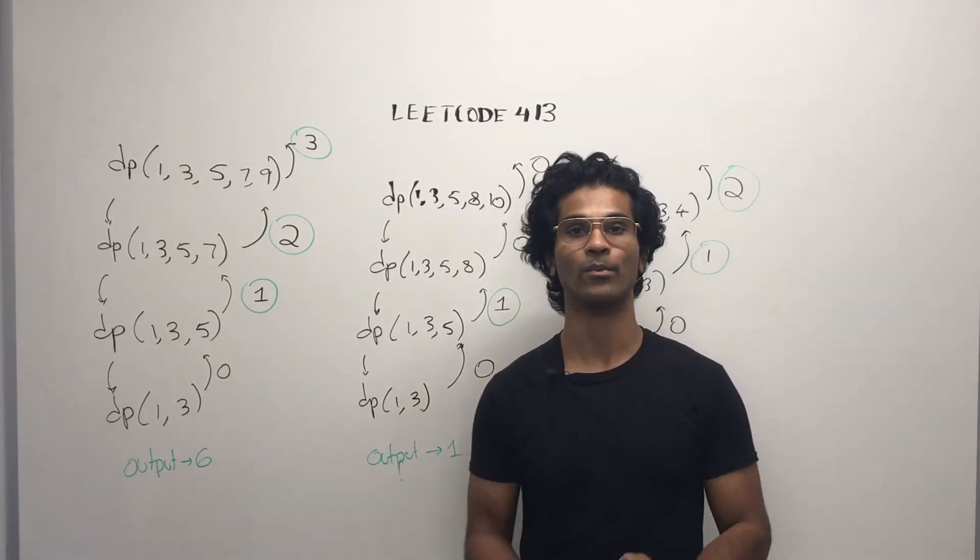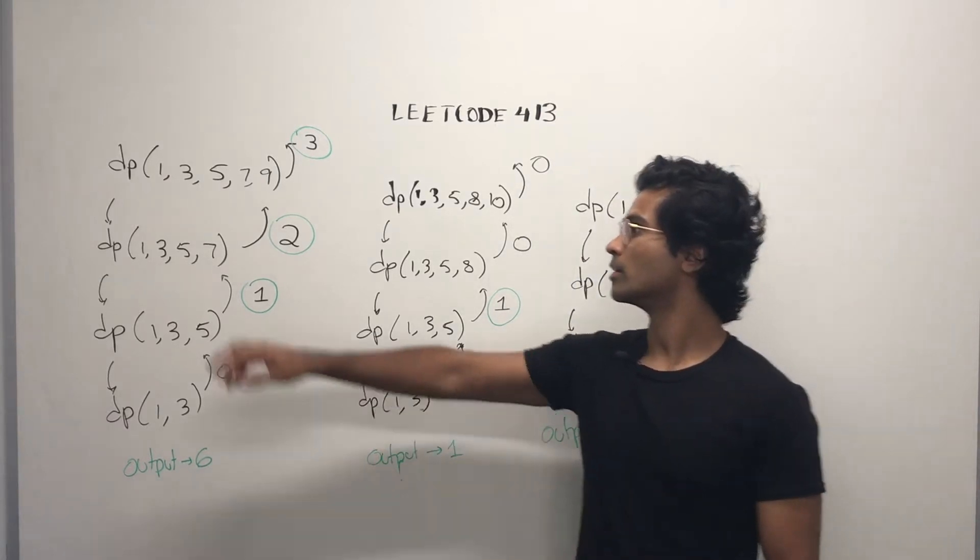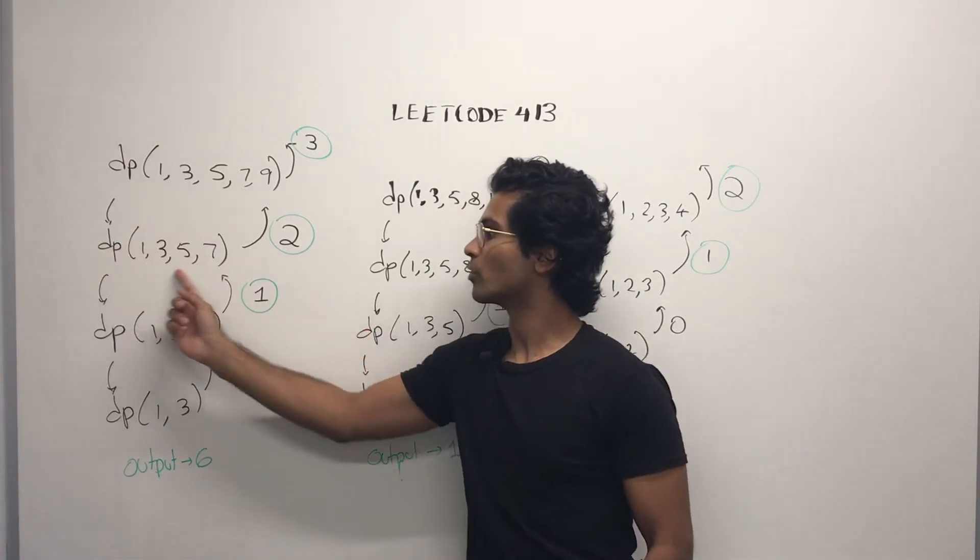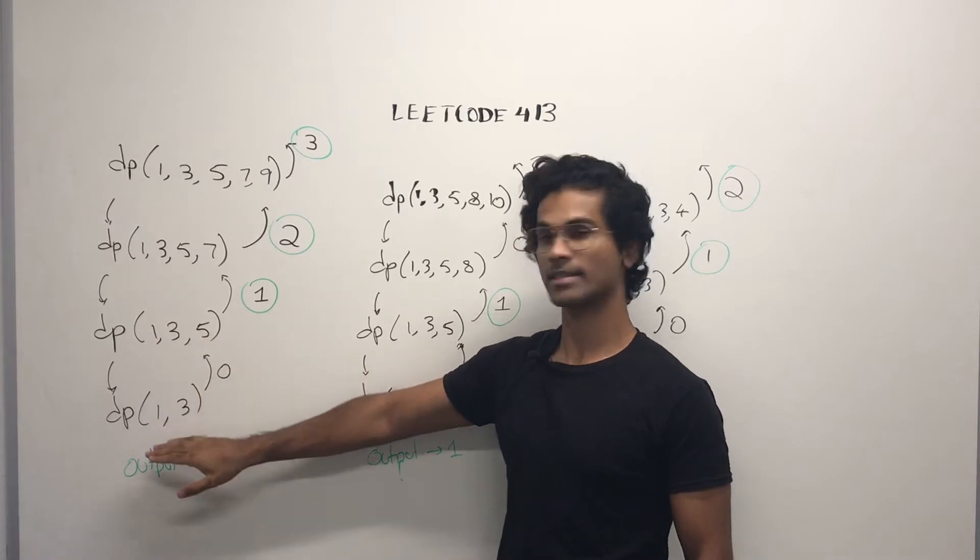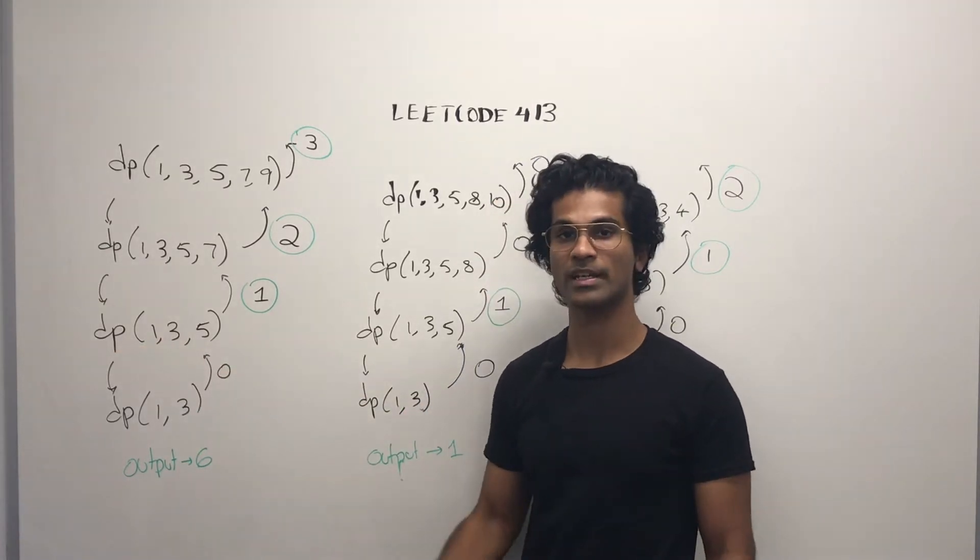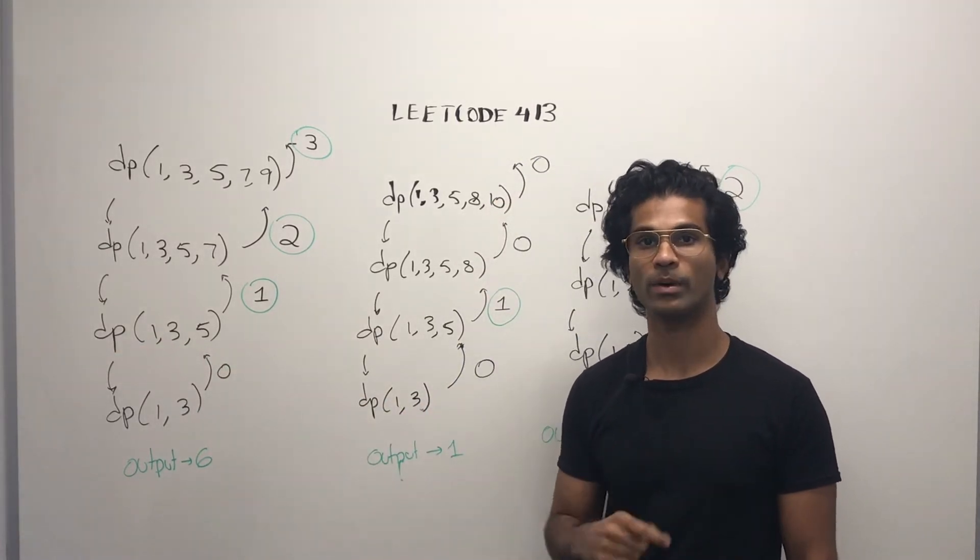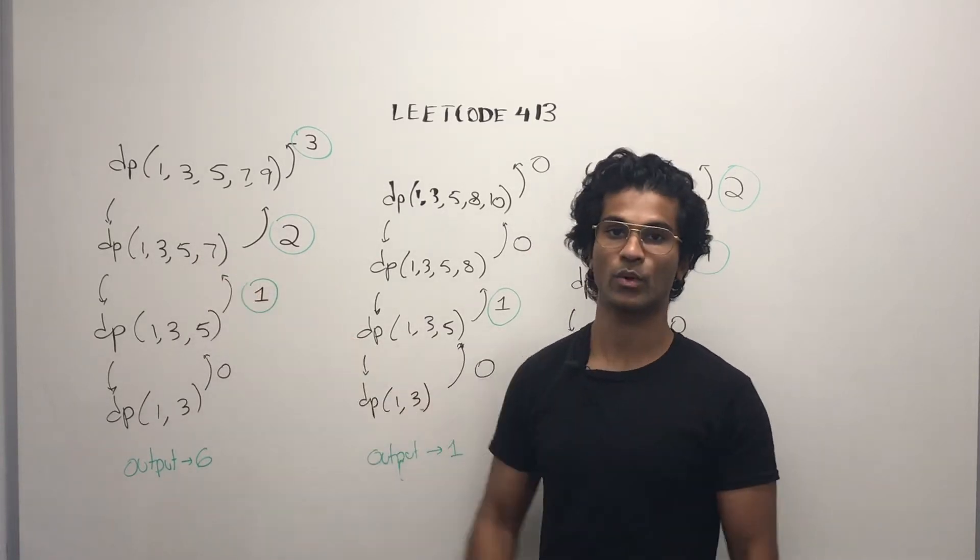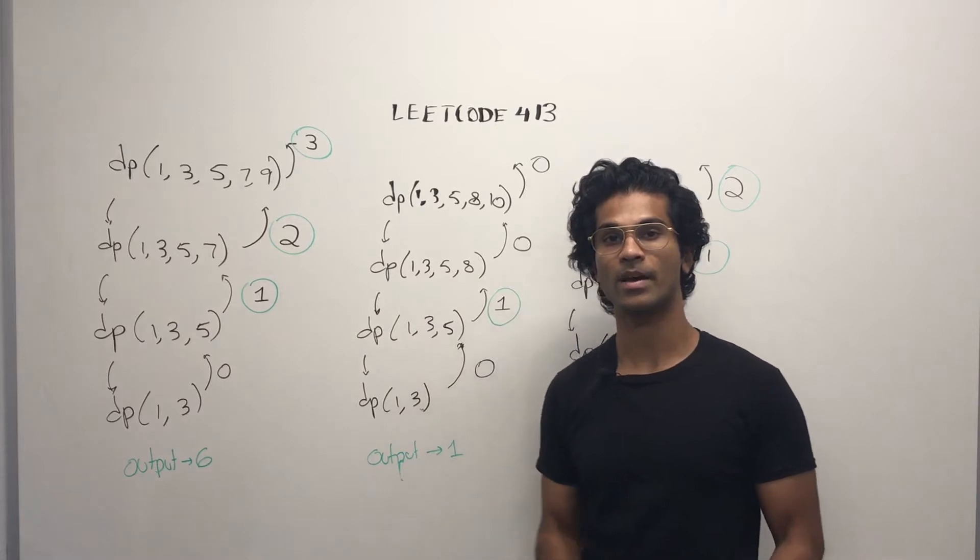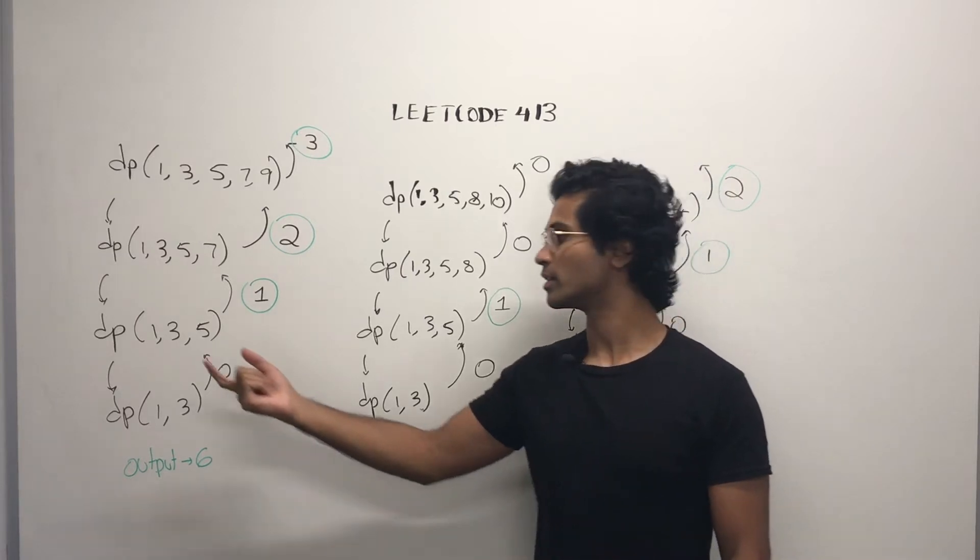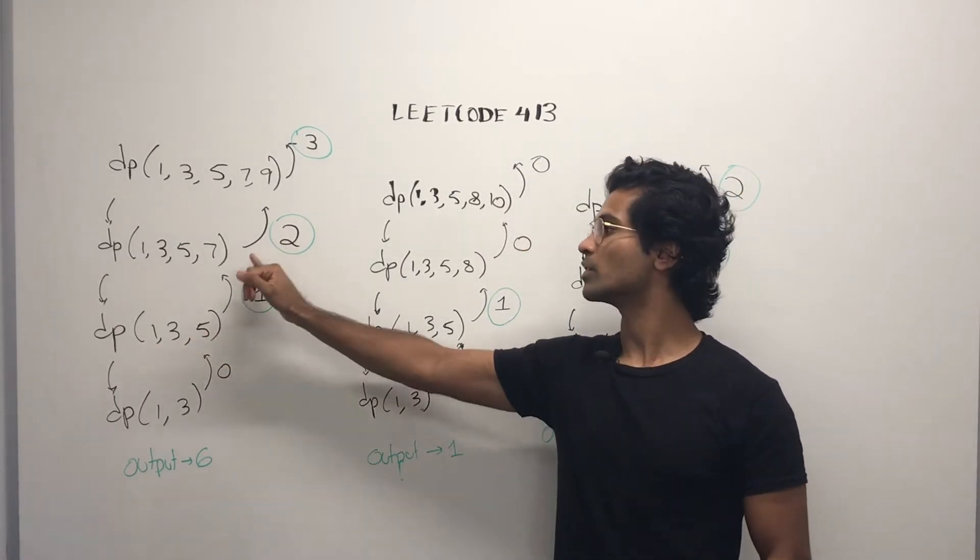Here are a few more cases. Let's say our input array was 1, 3, 5, 7, and 9. So that array is going to recursively ask one shorter array. That's going to ask something shorter, and that's going to ask the base case. The base case, of course, always returns 0. And then this stack is going to see if 5 minus 3 is the same as 3 minus 1. It is, so it's going to add 1 to whatever the base case returned it. So we go here. Now, that stack is going to see if 7 minus 5 is the same as 5 minus 3. And because the differences are the same, it's going to add 1 to whatever the child stack returned and return that. So this is going to return 2.